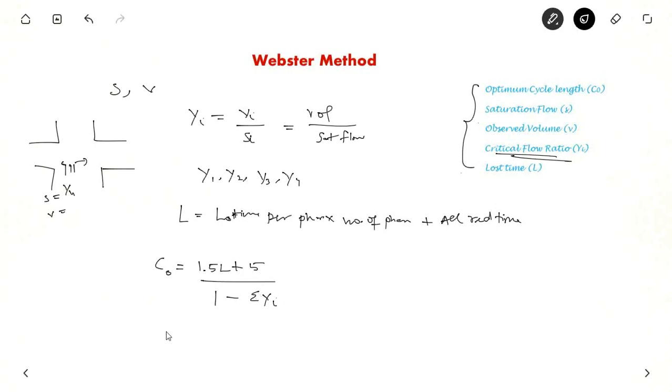And green time for each phase. Suppose you want to know for ith phase. Gi is equal to YI divided by Sigma YI, C0 minus L. So if you want to know for the first phase G1 equal to Y1 and suppose there are only two phases Y1 plus Y2, C0 minus L. This will give you the green for each phase.